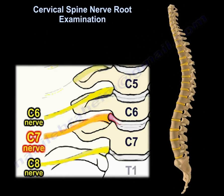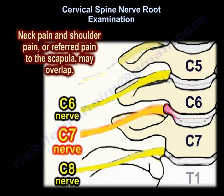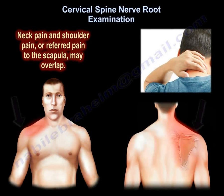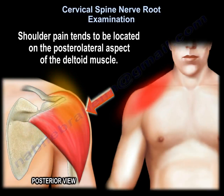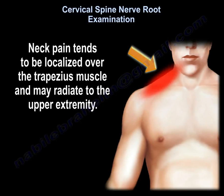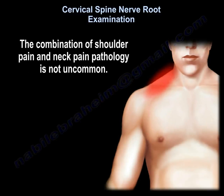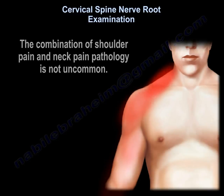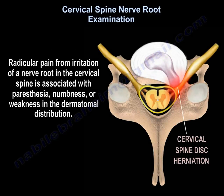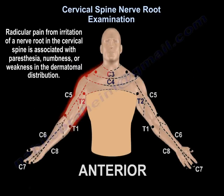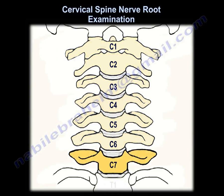This is a cervical spine nerve root examination. Neck pain and shoulder pain, or referred pain to the scapula, may overlap. Shoulder pain tends to be located on the posterolateral aspect of the deltoid muscle, while neck pain tends to be localized over the trapezius muscle and may radiate to the upper extremity. The combination of shoulder pain and neck pain pathology is not uncommon. Radicular pain from irritation of a nerve root in the cervical spine is associated with paresthesia, numbness, or weakness in the dermatomal distribution. So let's examine the cervical spine nerve roots.